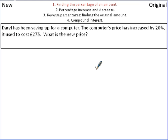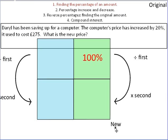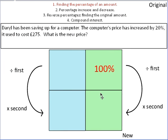This question is very similar, except it's in a worded format. So it's an assessment objective two type question. Daryl has been saving up for computer. The computer's price has increased by 20%. It used to cost 275 pounds. What is the new price? Again, let's get our box set up. 100% always in the top right corner. That's done for us. We just need to put in the new information. So original, 275 pounds. It's gone up by 20%. So we've gone up to 120.